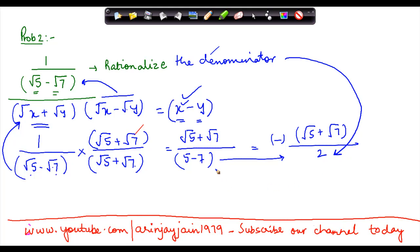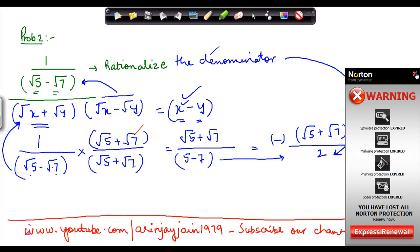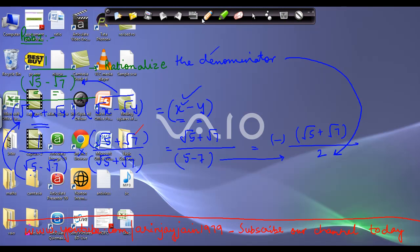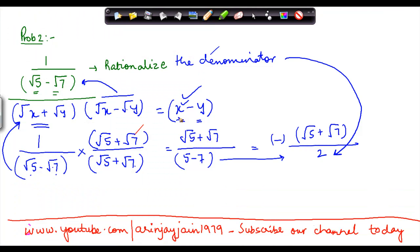Just at the cost of repetition, the solution lies in identifying which of the identities we had discussed earlier match with the denominator. Once you have done that, then it becomes fairly easy to rationalize this.